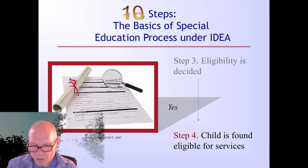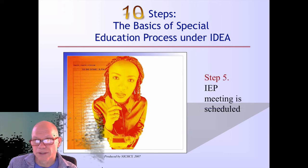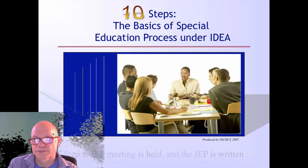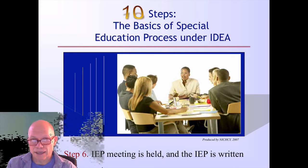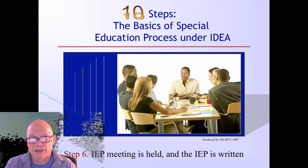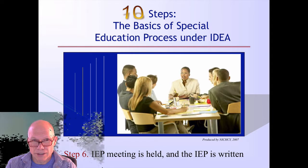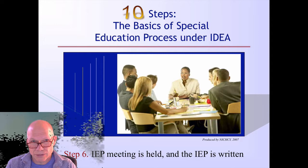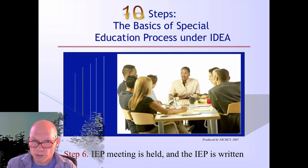If a child is found eligible for services at step four, then a meeting is scheduled to develop the individualized education plan and we'll talk more about what that is in just a minute. Then the IEP meeting is held and the IEP is written. Actually much of this is done behind the scenes before the meeting is ever really held. The special education teacher should have a pretty good idea and have floated some ideas of goals and objectives that will go in the IEP and related services so that the meeting goes smoothly.